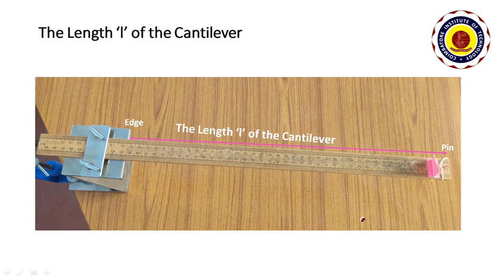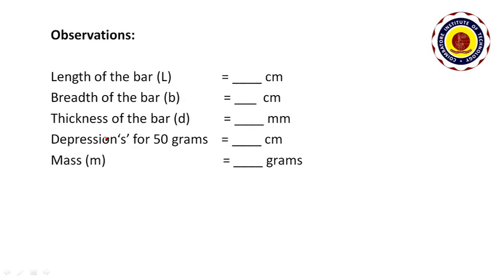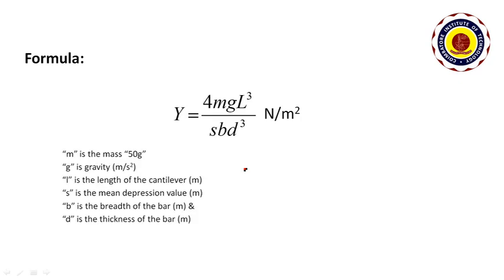Next, find the length of the cantilever. The length L is the distance between the tip of the pin and the edge of the clamp. After determining the L value, note down all the observations: length of the bar, breadth of the bar, thickness of the bar, depression, and the mass, which is 50 grams.